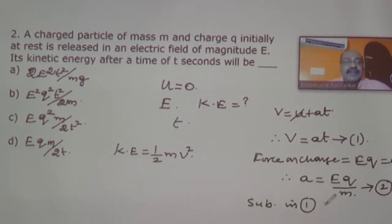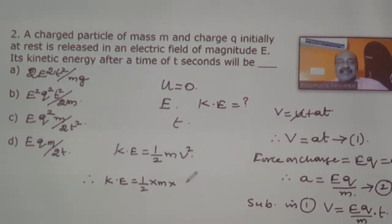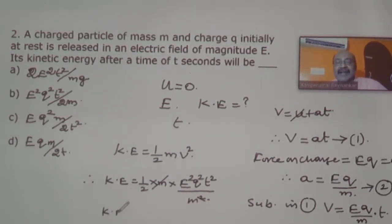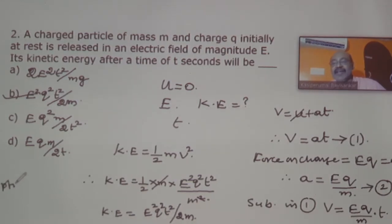Velocity will be equal to eq divided by m, into t. Substituting into the kinetic energy formula: KE equals half into m into v squared, which is half m into (eqt/m)² equals e²q²t² divided by 2m. One m cancels, and option B is the answer.